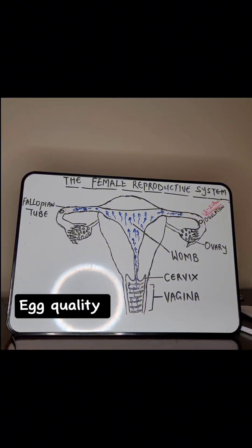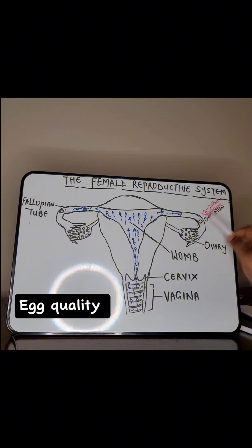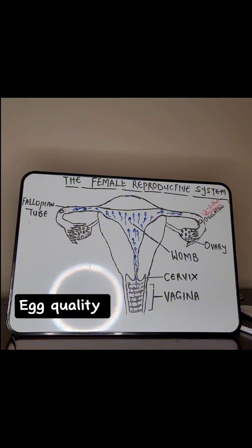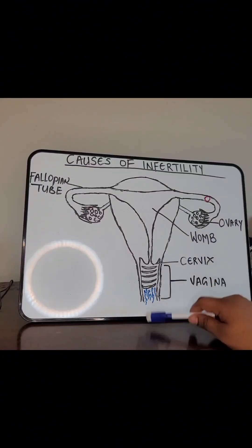Things that can block your tubes include PID (pelvic inflammatory disease), endometriosis, large fibroids, and adhesions. Now let's talk about age. As women, we reach a certain age where we have more abnormal eggs than normal ones. If the egg you release is abnormal, it will not be fertilized. Even if fertilization happens, this egg will not implant, or if it does, a miscarriage will happen. This is nature's way of filtering things not compatible with life, which is why age is very important in fertility.